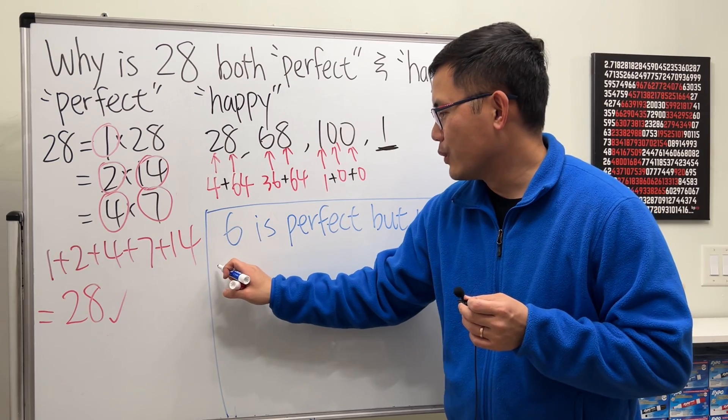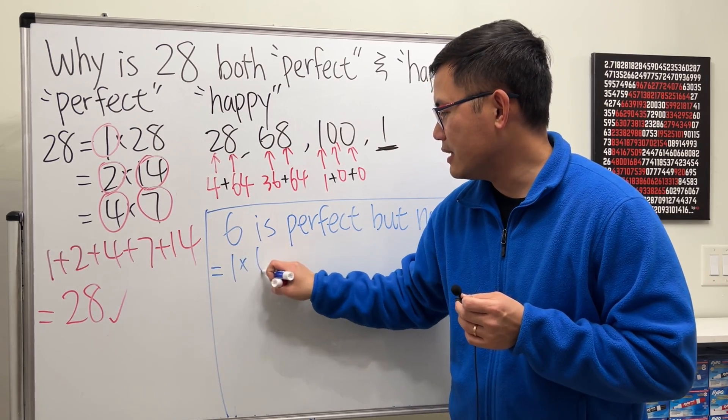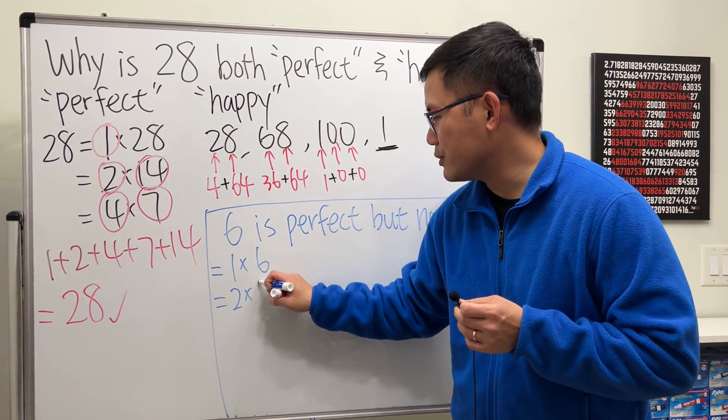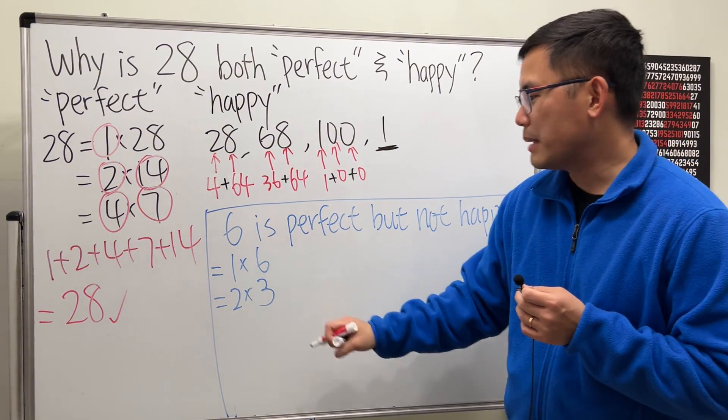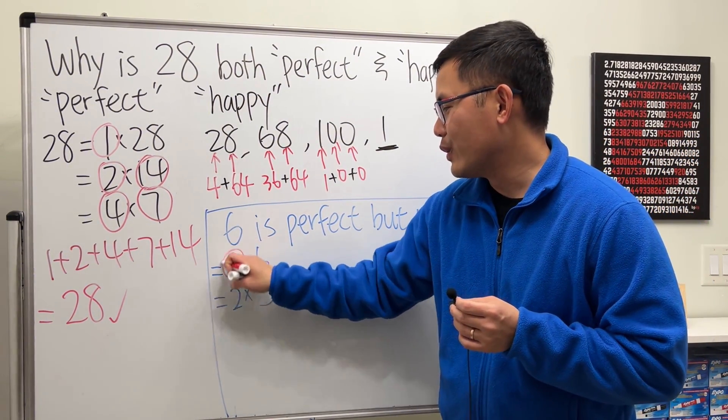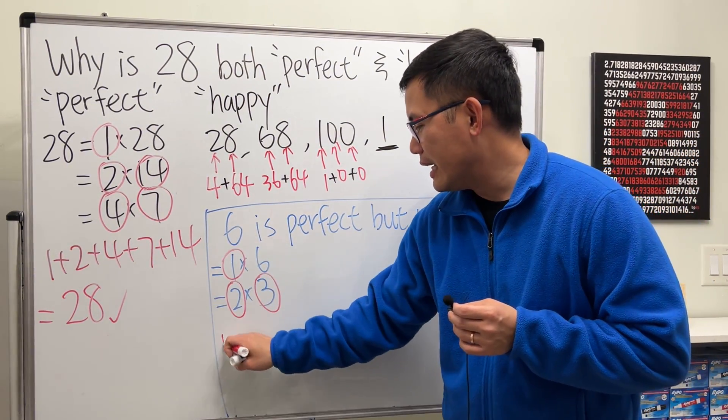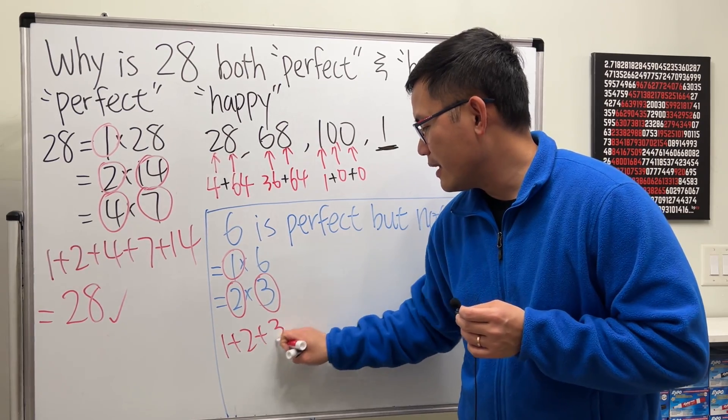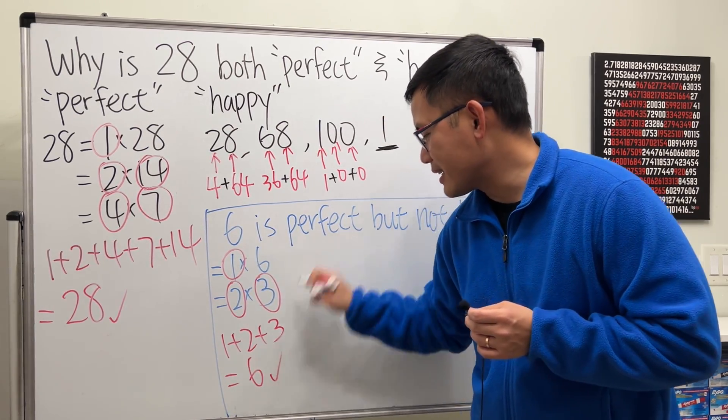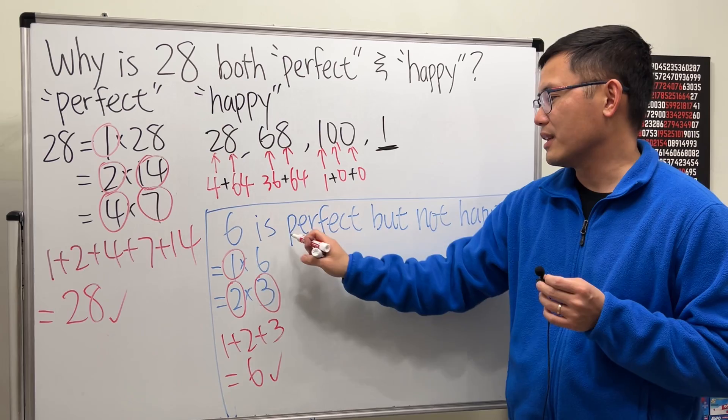Why? Let's have a look. 6. Look at this as 1 times 6, and then 2 times 3. And then look for its common factors, the proper factors. 1, 2, and 3. Add them up. Yes, we get 6 back. So, it is perfect. Checks.